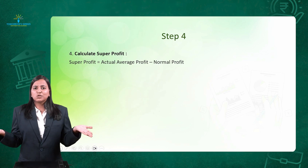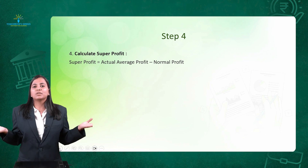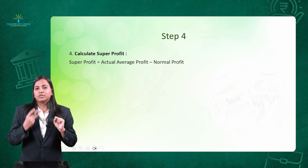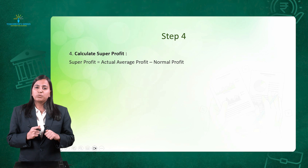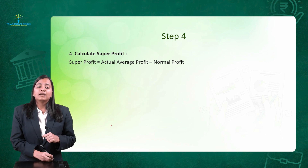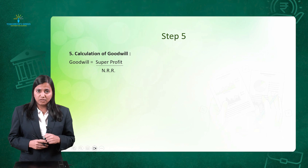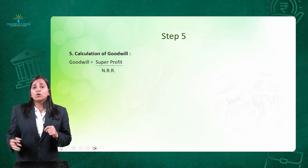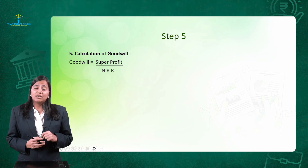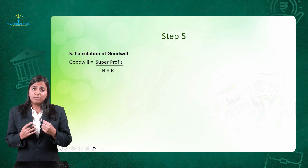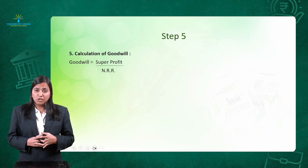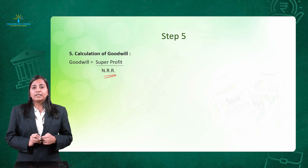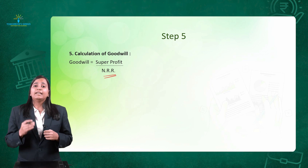Step number 4 is calculation of super profit — very simple. Super profit equals average profit from step 1 minus normal profit from step 3. Now for the final step, the calculation of goodwill: we are not multiplying by number of years as in method 1, and not multiplying by annuity factors as in the annuity method. Here we calculate the value of the firm by dividing super profit by NRR.